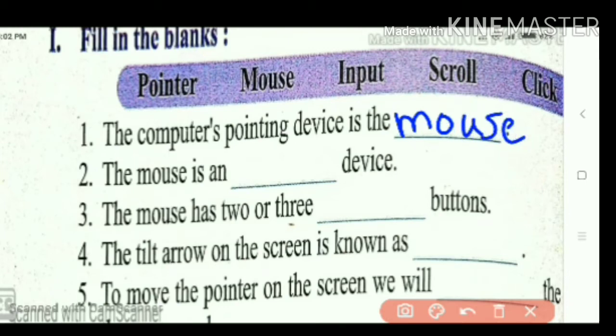Next, the mouse is a... device. Mouse is an input device. I-N-P-U-T, input. The mouse has 2 or 3... buttons. The mouse has 2 or 3 click buttons. C-L-I-C-K, click.